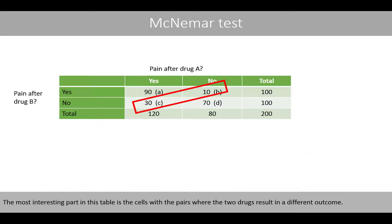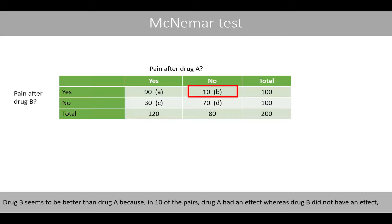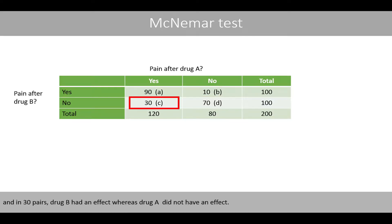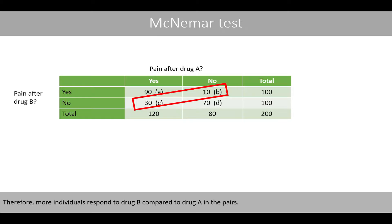The most interesting part in this table is the cells with the pairs where the two drugs result in a different outcome. In total, we have 40 pairs where the two drugs result in different outcomes. Drug B seems to be better than drug A, because in 10 of the pairs drug A had an effect whereas drug B did not, and in 30 pairs drug B had an effect whereas drug A did not. Therefore, more individuals respond to drug B compared to drug A in the pairs.